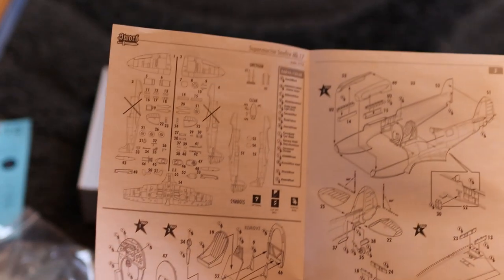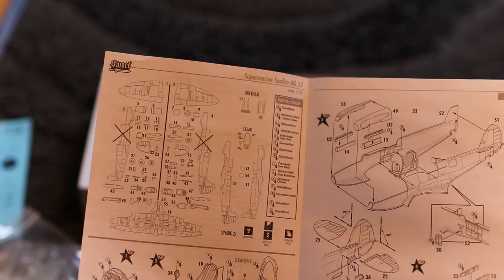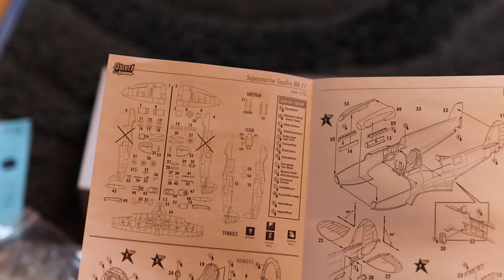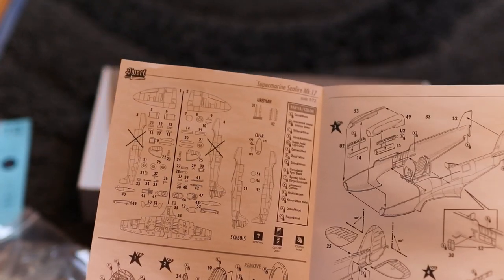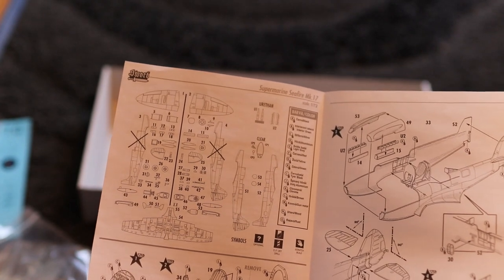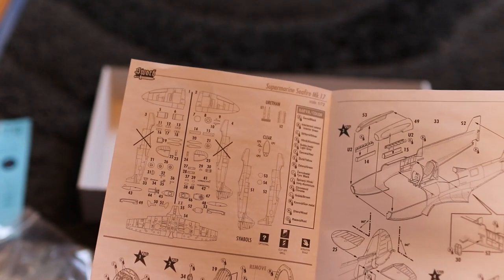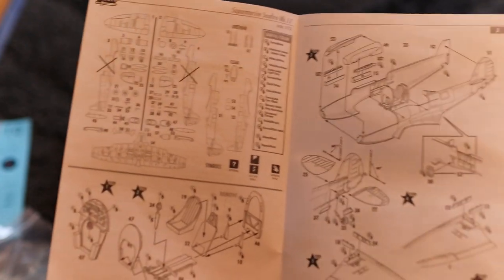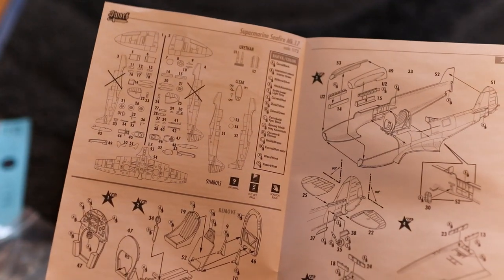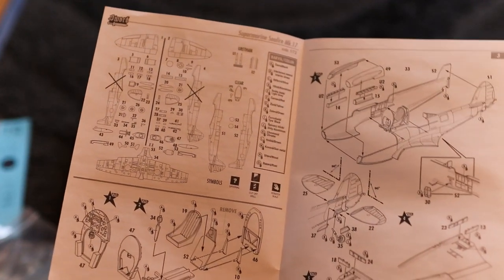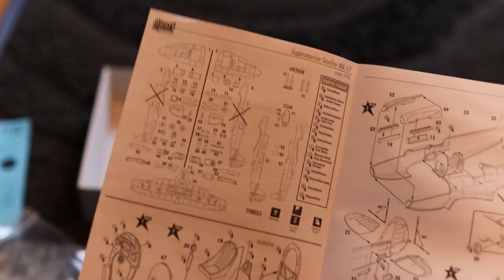Then we've got our sprue maps telling us about the extra parts that we don't need to use. One of the things I've noticed when doing these is you do get a lot of spare parts. I think what Sword do is they make a single sprue that does all sorts of different variations. What you're left with is almost enough spare parts to make another one.